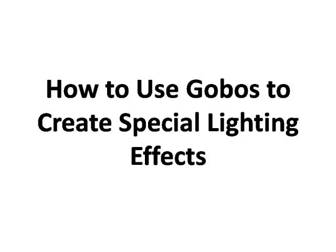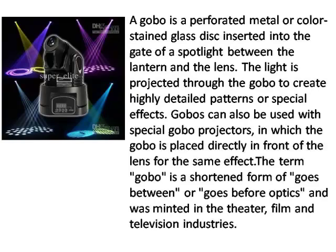How to use Gobos to create special lighting effects. A Gobo is a perforated metal or color stained glass disc inserted into the gate of a spotlight, between the lantern and the lens. The light is projected through the Gobo to create highly detailed patterns or special effects.